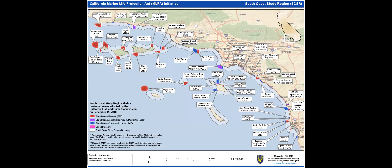This slide shows the network of MPAs set up in the South Coast region, one of the four regions where MLPA set up reserves. The Marine Life Protection Act in California is perhaps the largest network of MPAs that were designed with extensive input from stakeholders and scientists and have specific written objectives.